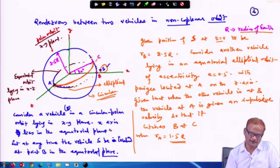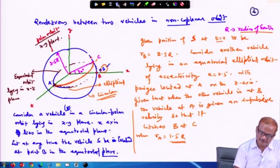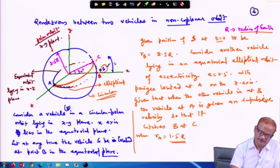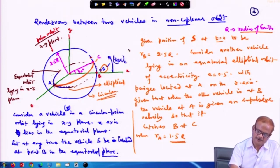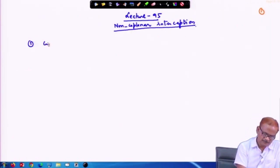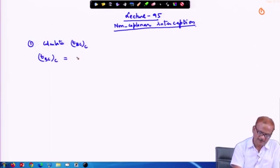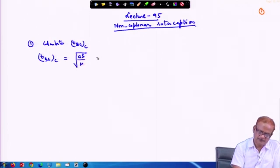The first step is to calculate the time required to go from this point to this point — TBC in the circular orbit. This is a case of circular orbit, but it can also be an elliptical orbit; the polar orbit can also be elliptical. TBC in the circular orbit will be the time period. We have written this as a^(3/2) divided by sqrt(mu) times phi_BC from B to C. The angle phi_BC we need to use here.